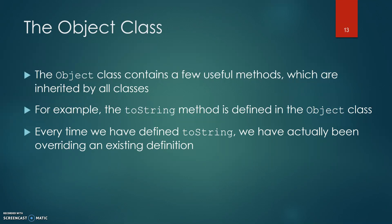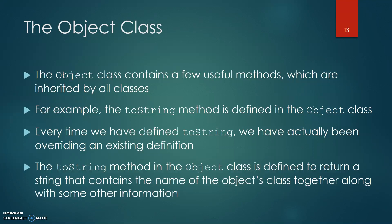Every time we have defined toString, we have actually been overriding an existing definition. The toString method in the Object class is defined to return a string that contains the name of the object's class along with some other information.